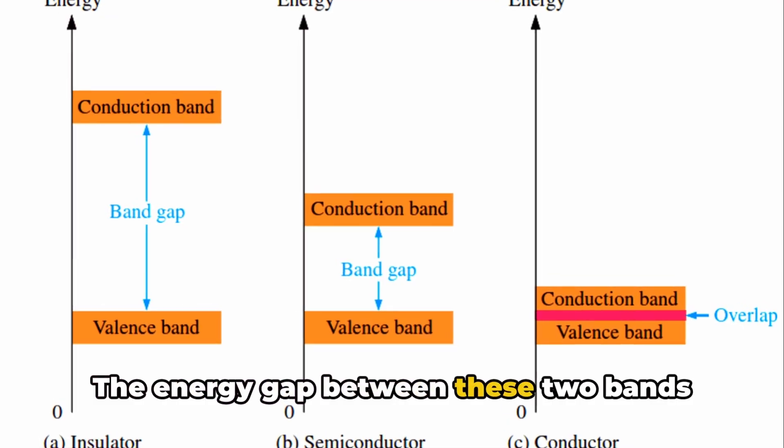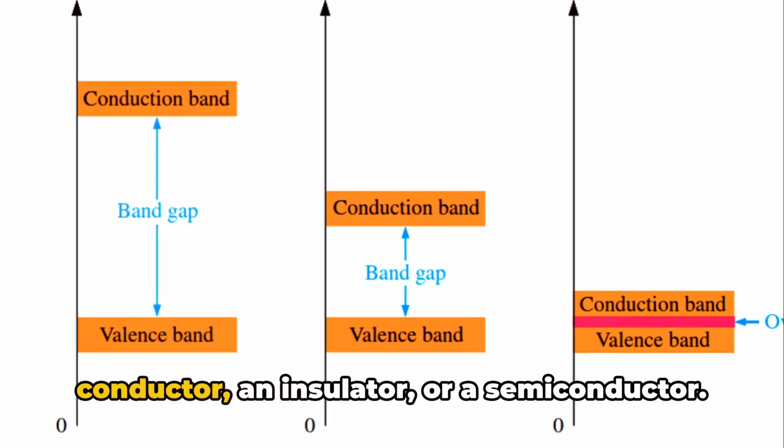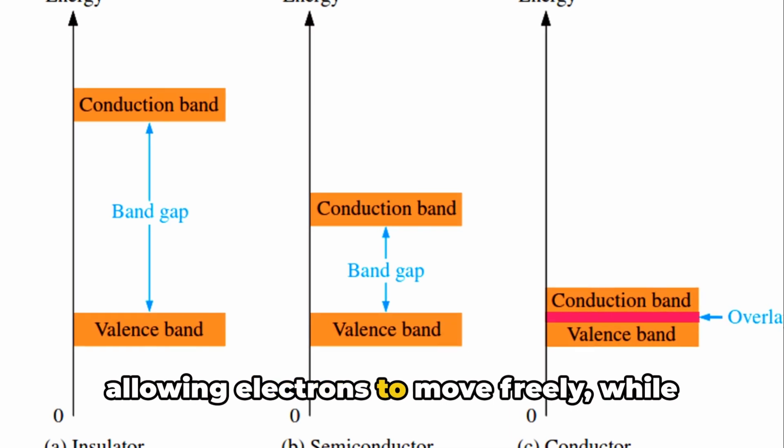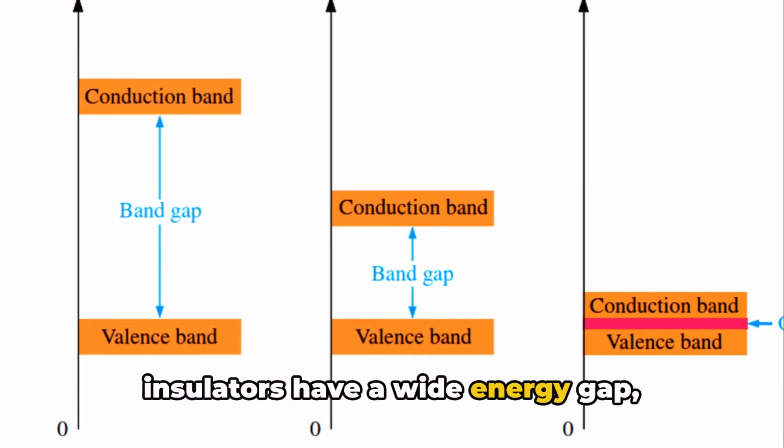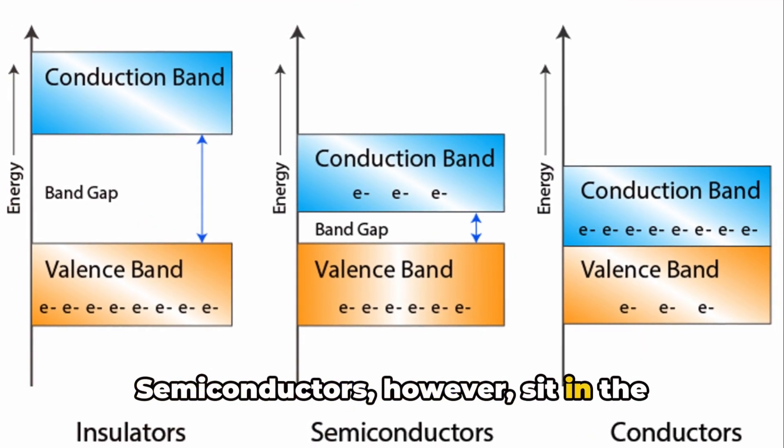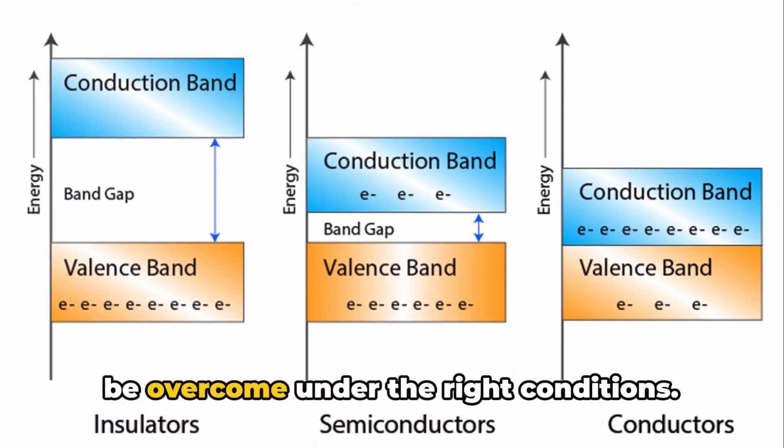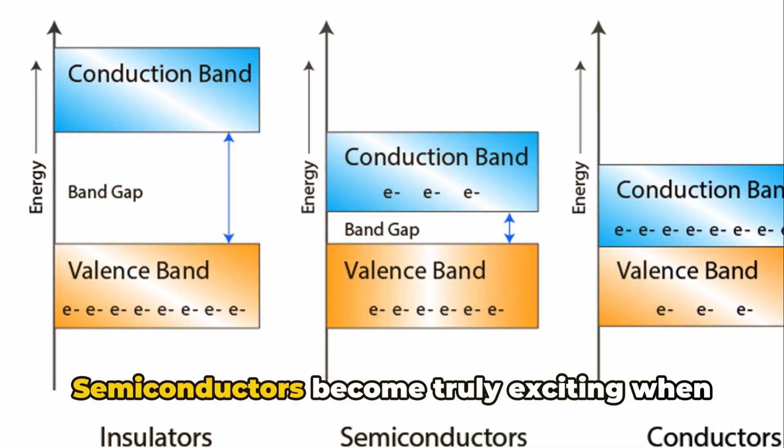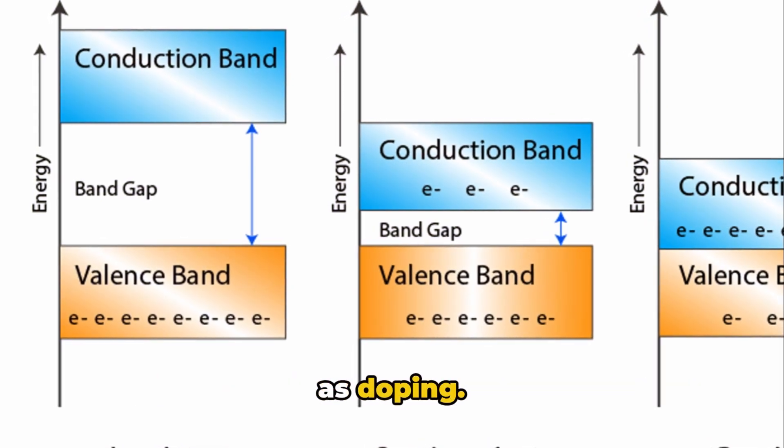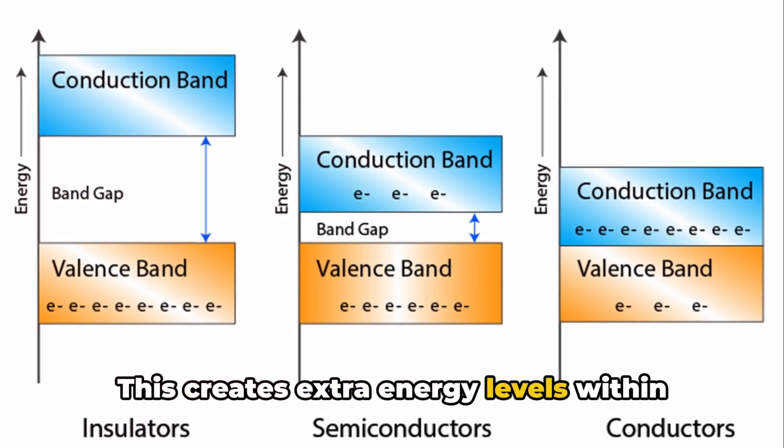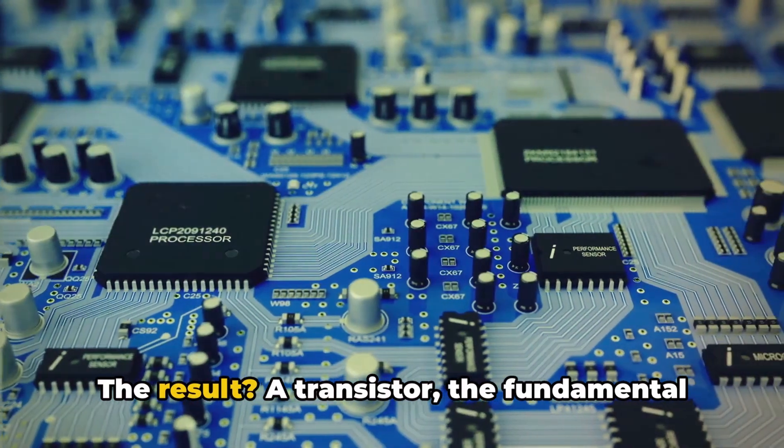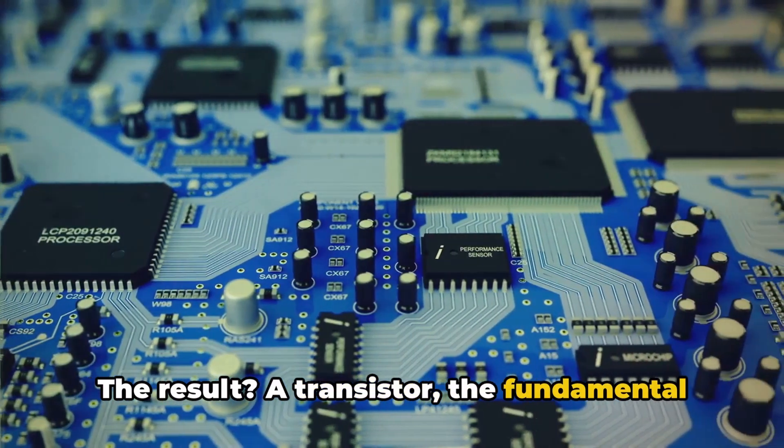The energy gap between these two bands determines whether a material is a conductor, an insulator, or a semiconductor. Conductors have overlapping bands allowing electrons to move freely, while insulators have a wide energy gap restricting electron movement. Semiconductors, however, sit in the middle with a small energy gap that can be overcome under the right conditions. Semiconductors become truly exciting when we introduce impurities, a process known as doping. This creates extra energy levels within the band gap, making it easier for electrons to jump to the conduction band. The result: a transistor, the fundamental building block of modern electronics capable of controlling electrical current.